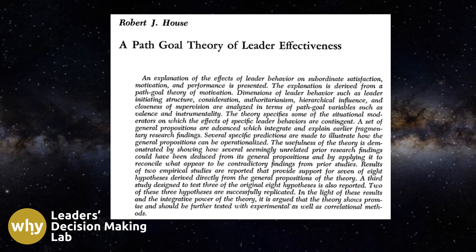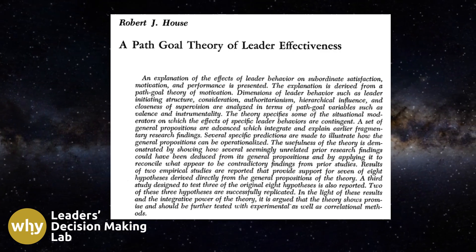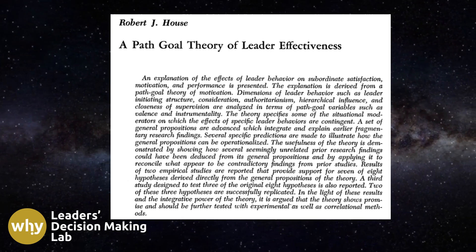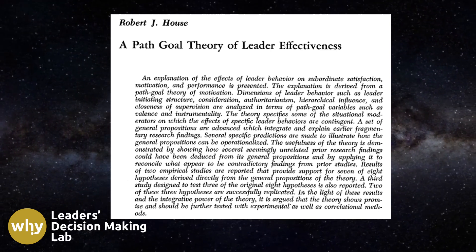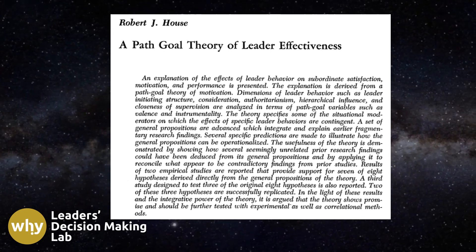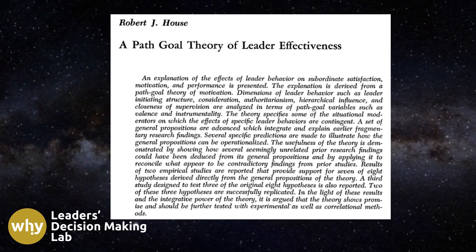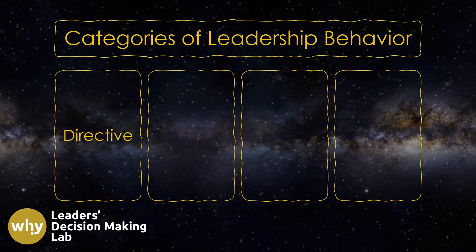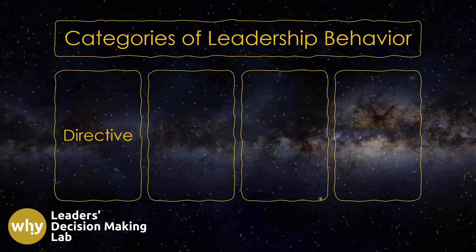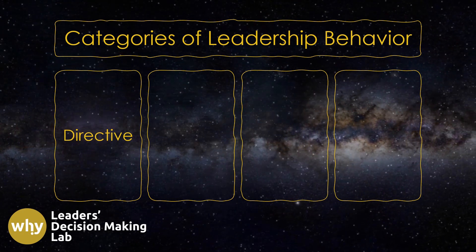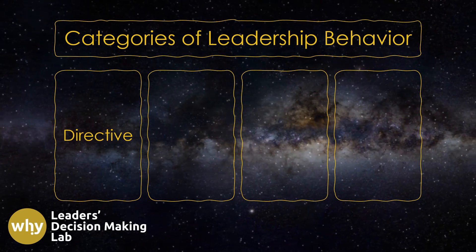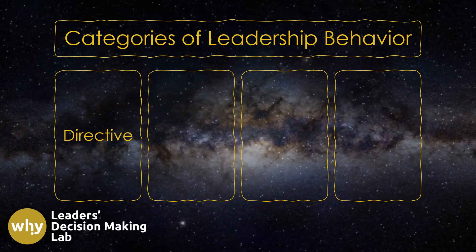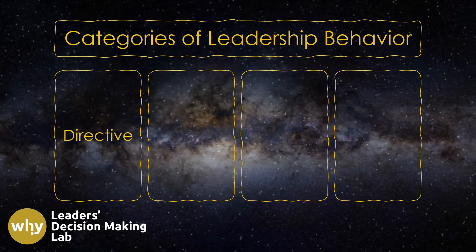It's important to note that this theory is concerned with dyadic relationships between leaders and employees and does not consider larger work units or groups. The theory suggests that there are four major categories of leadership behavior: directive, supportive, achievement-oriented, and participative.